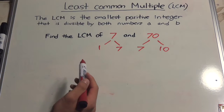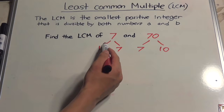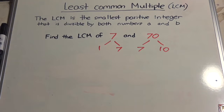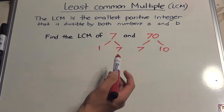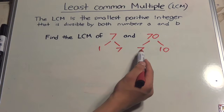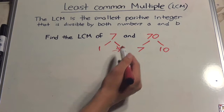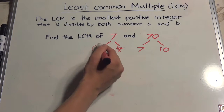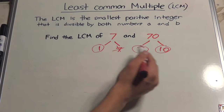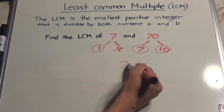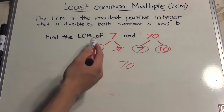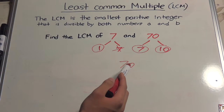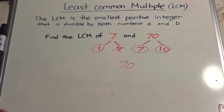Find the LCM of 7 and 70. We could break up 7 into its factors 1 and 7, and the factors of 70 would be 7 and 10. 7 and 7 match, so we can take out one of the 7s and multiply the rest of the numbers together: 1 times 7 times 10. That makes sense because 70 is divisible by both 7 and 70.